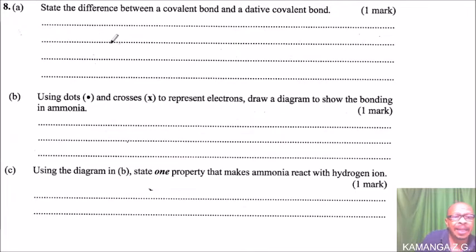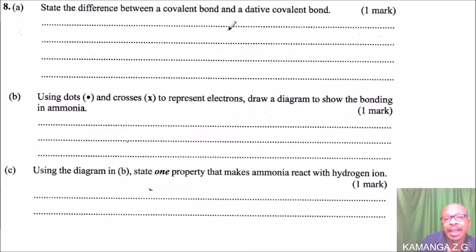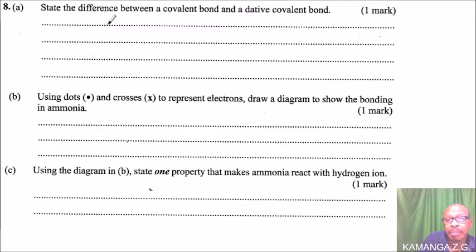This is question number 8, part A: state the difference between a covalent bond and a dative covalent bond. The difference is that in a covalent bond the shared electrons are contributed by both atoms, while in a dative covalent bond the shared electrons are contributed by one atom.